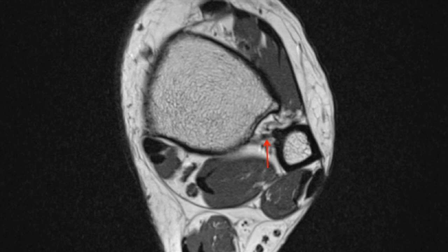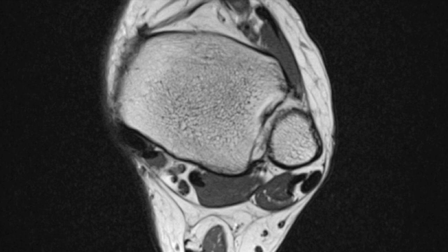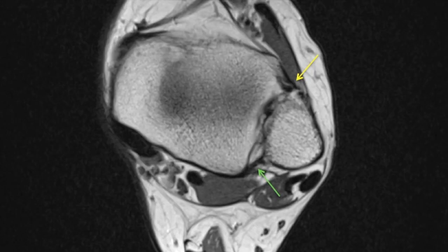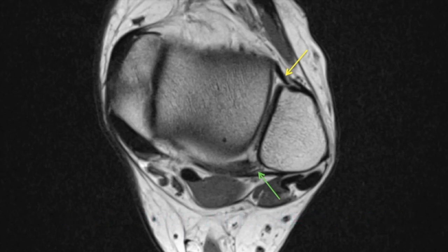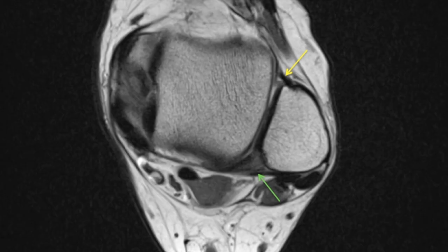Going further inferiorly, at the level where the tibia is ending and the talus is about to start, you can see thin hypointense bands both anteriorly and posteriorly bridging between the tibia and the fibula — these are the anterior and posterior tibio-fibular ligaments, which also run obliquely. The key to identify the level at which these ligaments are seen is when the talus has a squared appearance. These three ligaments — anterior and posterior tibio-fibular and syndesmotic — are high ankle ligaments, and injury to them can change management from conservative to surgical.